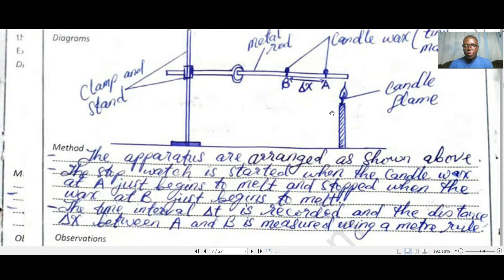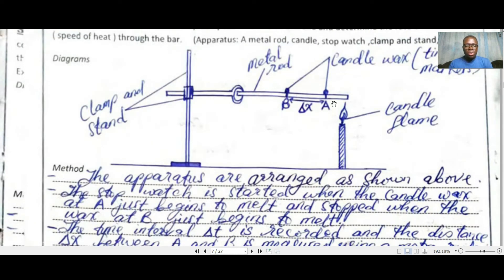When we light the candle flame, the metal rod absorbs heat and transfers it to Point A. Immediately when the candle wax at Point A starts melting, we start the stopwatch. As time passes, heat continues to transfer along the rod. When we observe the candle wax at Point B melting, we stop the stopwatch and note the time. We then use a ruler to measure the distance between Point A and Point B.